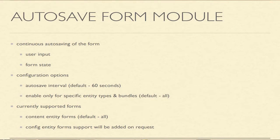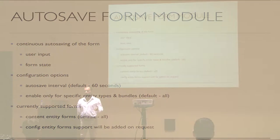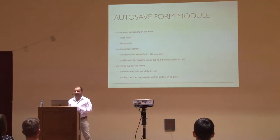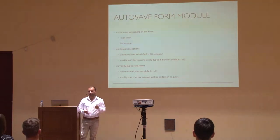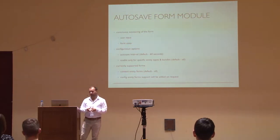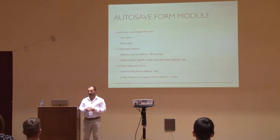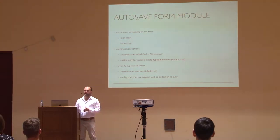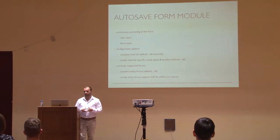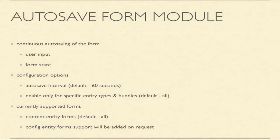I think everybody knows what the tasks of autosave are, and that's to continuously save, autosave, persist in a way, the state of the form and the user input. The module itself is pretty simple. You just install it and it works out of the box. It has several configurable options, like configuring the interval — how often autosave will be triggered — and you could also enable or disable it for specific entity types and bundles. Currently, we support only content entity forms. We haven't implemented it for config entity forms, not because it's not possible, but because we wanted to concentrate on content entity forms.